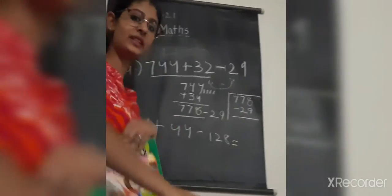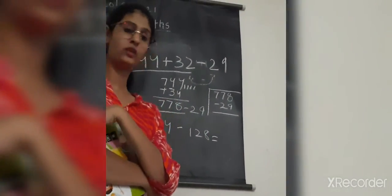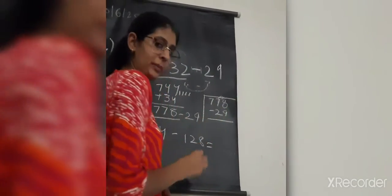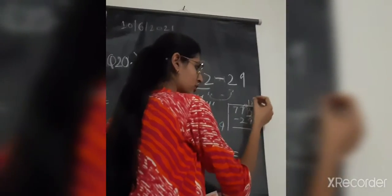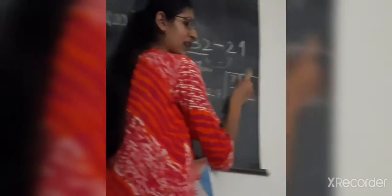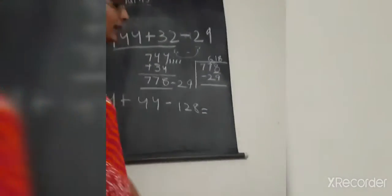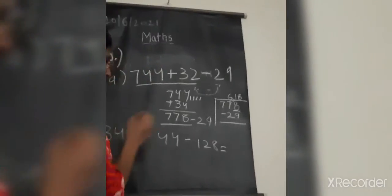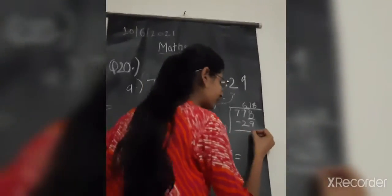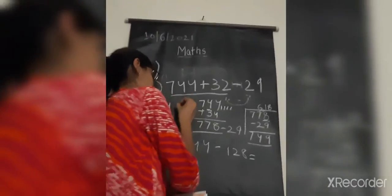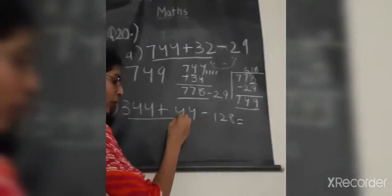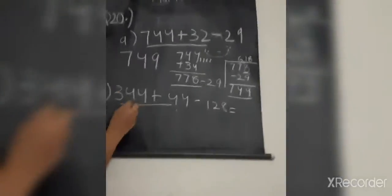So you got it — 8 is lesser than 9, so we should carry 1 from the tens column, making it 18. 18 minus 9 gives us 9. Then in the tens, after borrowing, 6 is lesser than 9, so we carry again — 6 becomes 16, and we proceed with the borrowing.